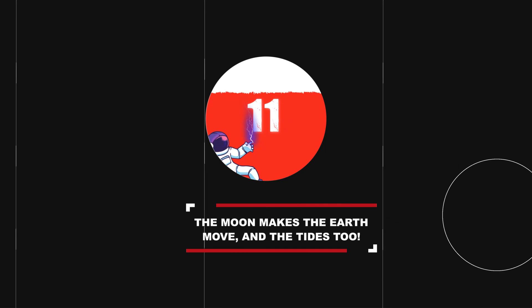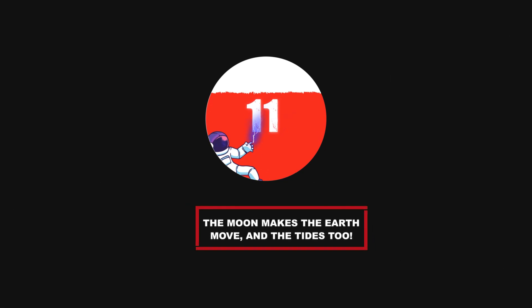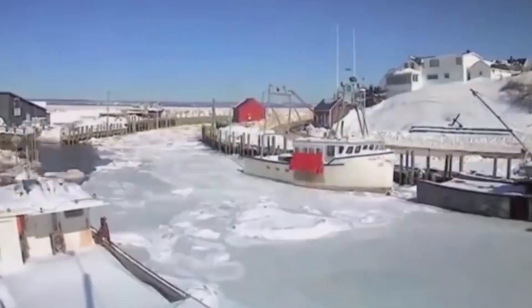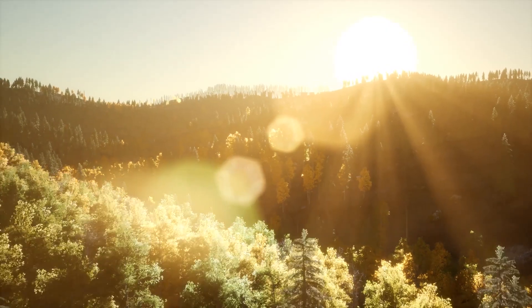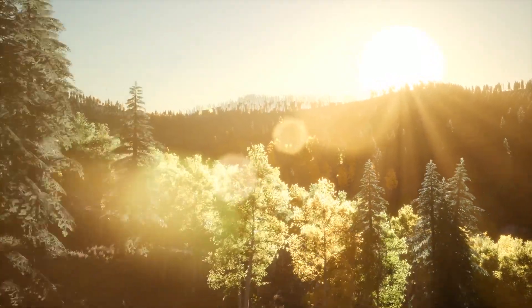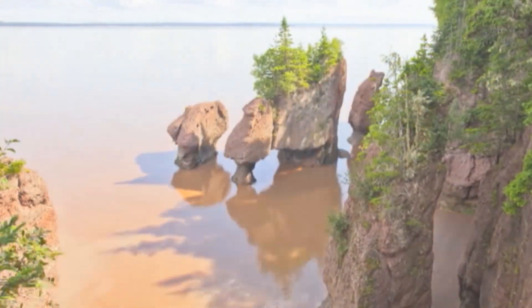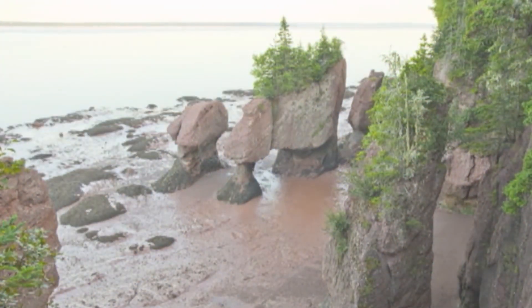Number 11: The Moon makes the Earth move, and the tides too. Everyone knows that the Moon is slightly responsible for causing the tides of our oceans and seas on Earth, with the Sun also having an effect. Still, as the Moon orbits the Earth, it also causes the tide of rock to rise and fall in the same way as it does with water.